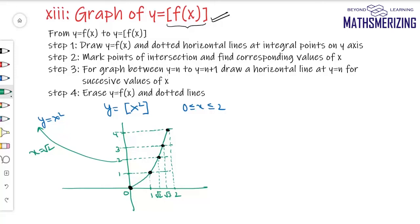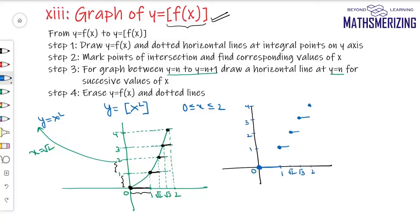The next step: for the graph between y = n and y = n+1, draw a horizontal line at y = n for successive values of x. Between x = 0 and 1, draw a horizontal line at y = 0; between x = 1 and √2, draw a horizontal line at y = 1; between x = √2 and √3 draw at y = 2; between √3 and 2 draw at y = 3. The graph in black is the graph of y = ⌊x²⌋. The fourth step is to erase the graph of y = f(x) and the dotted lines. That's the final graph of y = ⌊x²⌋.